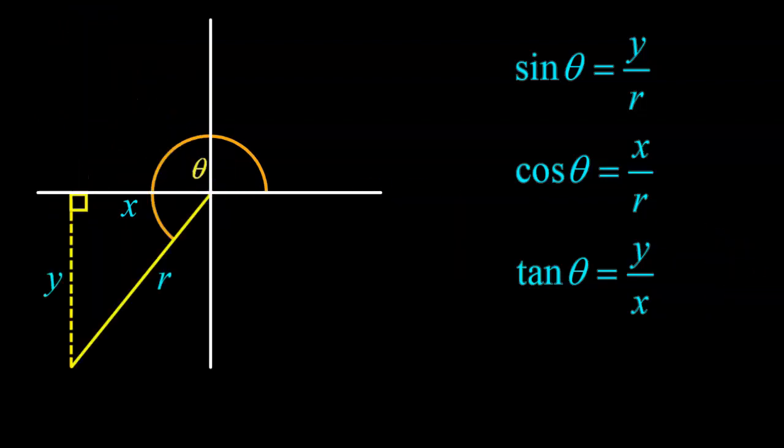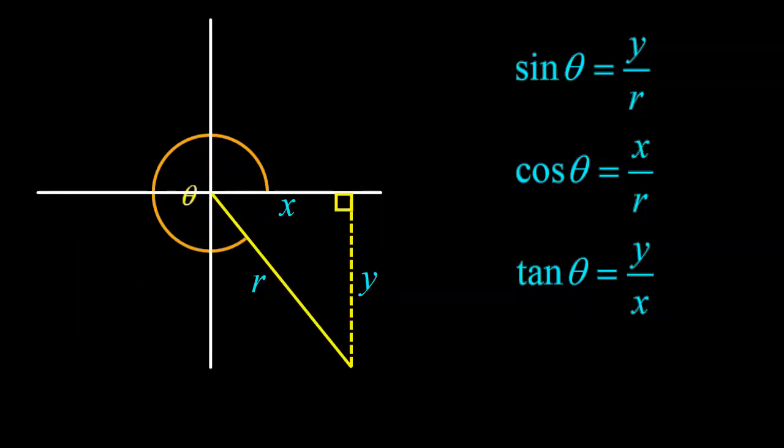In the third quadrant, it's no different. Now we're working with angles between 180 degrees and 270 degrees. The definitions remain the same. In the fourth quadrant, still the same, except now x is positive, y is negative, and again, r is always positive.